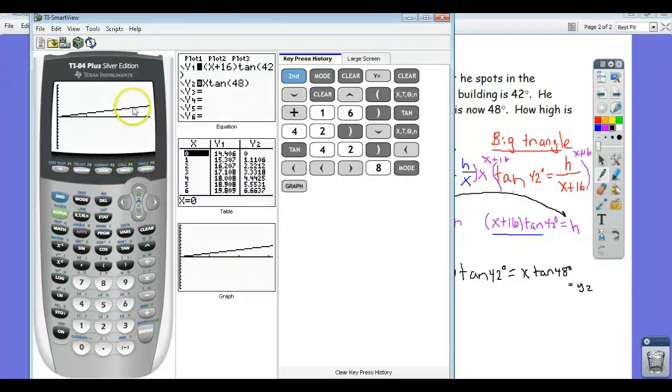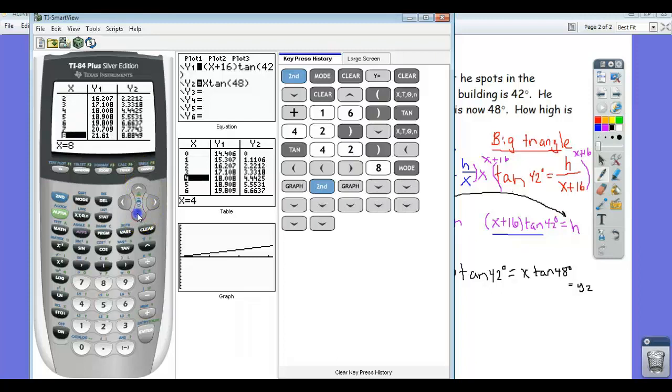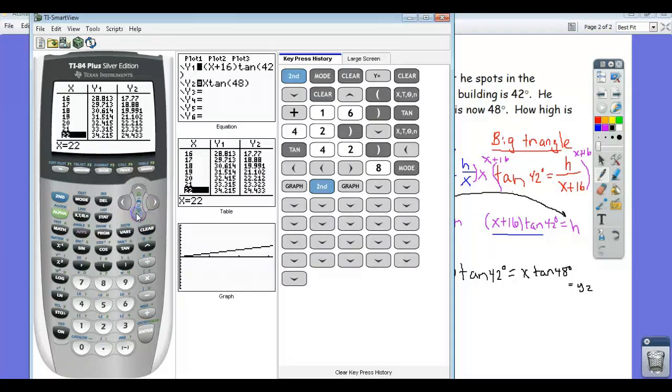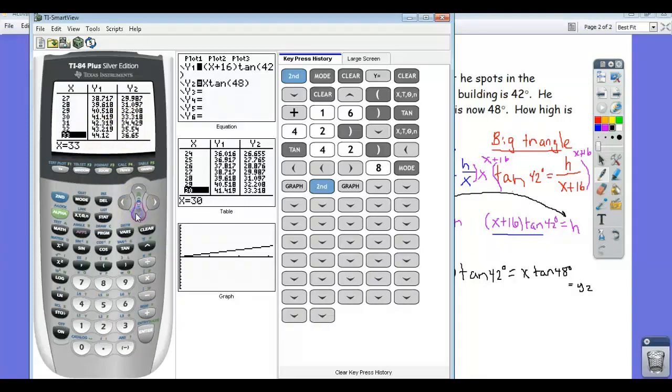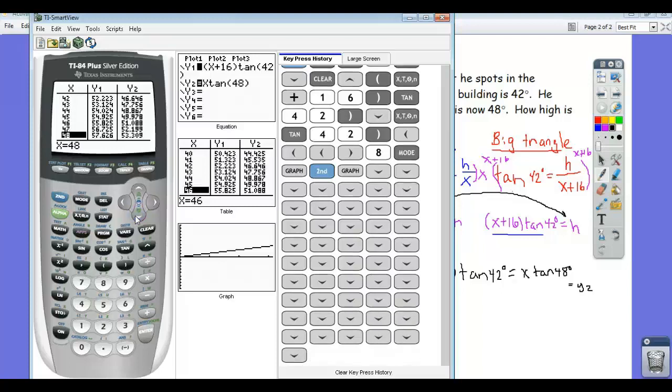Now, if I graph, it's a little unclear where they intersect because my window's not in the right place. So what I might have to do is go to the table, second table, and kind of just get a sense of what these values are doing. So it looks like I'm going to have to make my x values, you can see that the y's are kind of getting closer as I move up. So I'm going to have to make my x values go kind of up to like at least like maybe 50, 60.